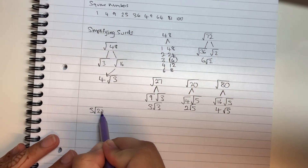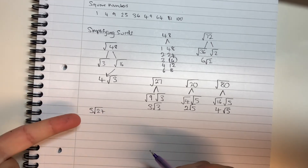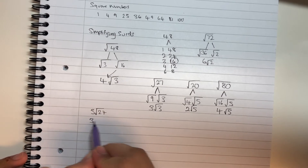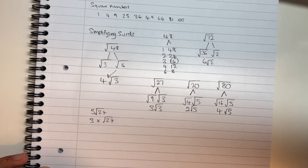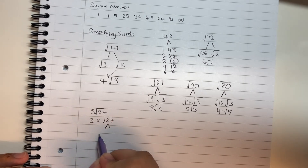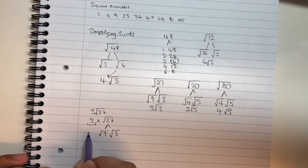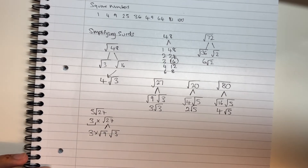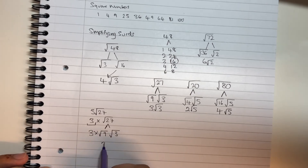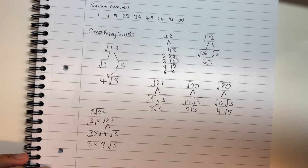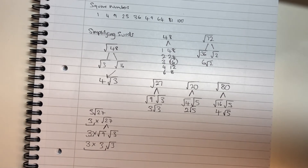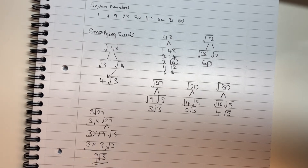What if the expression looked like 3 root 27? Remember, when a number is next to a third it's being multiplied, so write it as 3 times root 27. Simplify root 27: the biggest square number is 9, and 27 divided by 9 is 3, giving root 9 and root 3. Bring the 3 down: 3 × root 9 × root 3. Root 9 simplifies to 3, so we have 3 × 3 × root 3. Multiplying the whole numbers: 3 × 3 = 9, giving a final answer of 9 root 3.